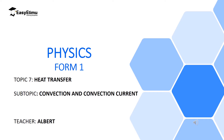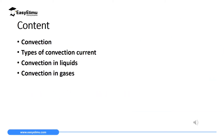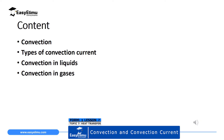In this lesson we are going to discuss convection, and we are going to realize that convection is only experienced in substances which can flow — that is liquids and gases — and convection cannot be experienced in solids. By the end of this lesson I expect you to be able to explain what convection is and where it is experienced, explain the types of convection current, explain convection in liquids, and finally convection in gases.